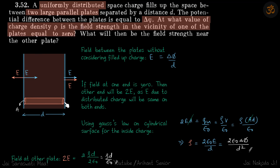We are given two parallel plates in which there is a potential difference of delta phi. Now if you fill some charge between the plates, we need to find what should be the charge density such that the electric field at one of the plates becomes zero.